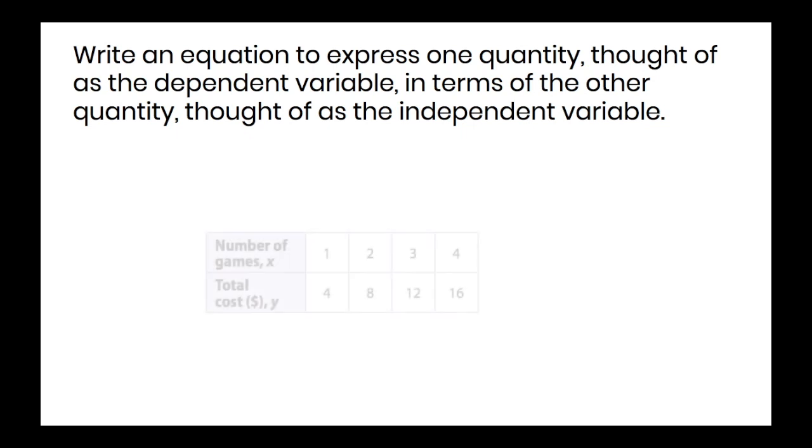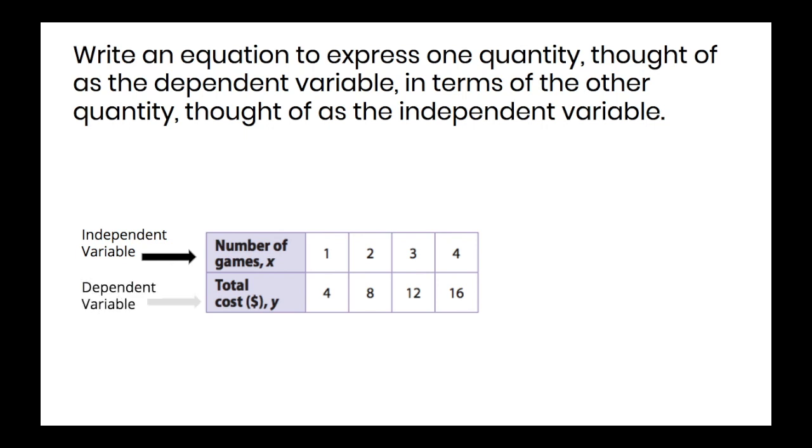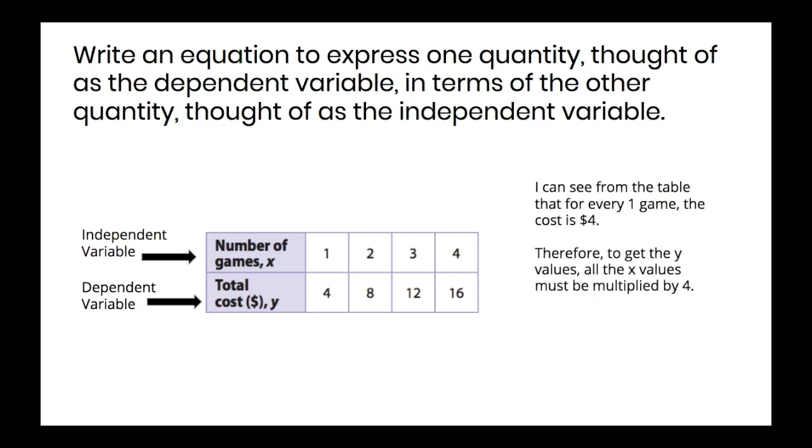Now let's look at a table of values. This table shows the number of games labeled x. This is the independent variable. And the total cost labeled y, which is the dependent variable. So I can see that from the table that for every one game, the cost is $4. So therefore, to get the y values, the total cost, the x values must be multiplied by 4.